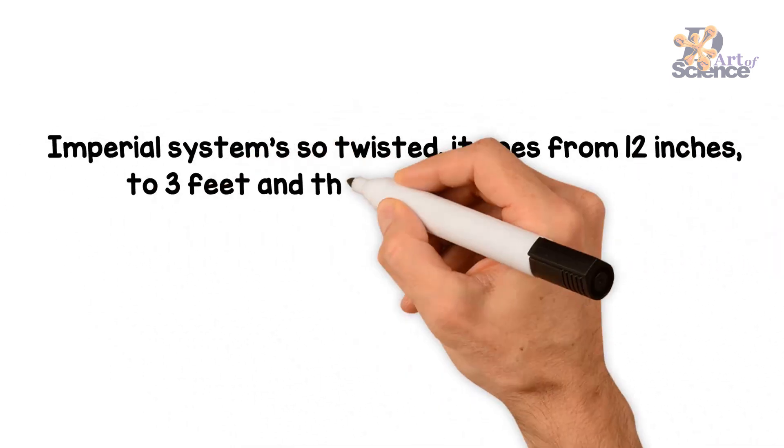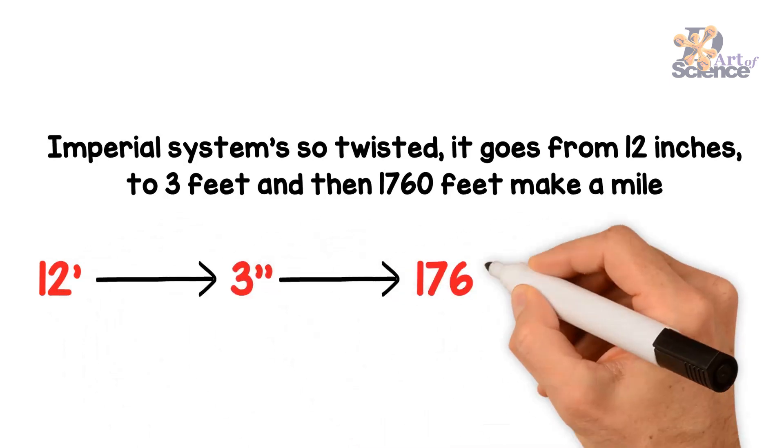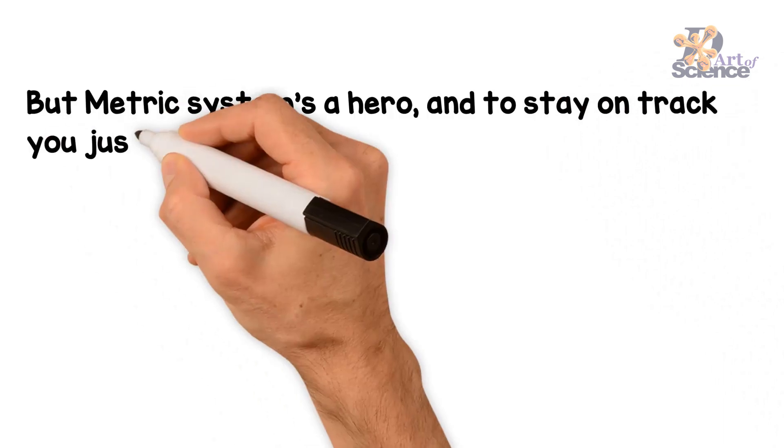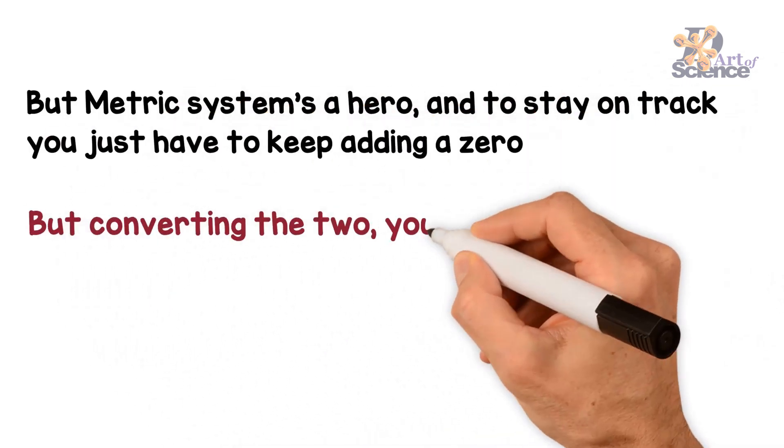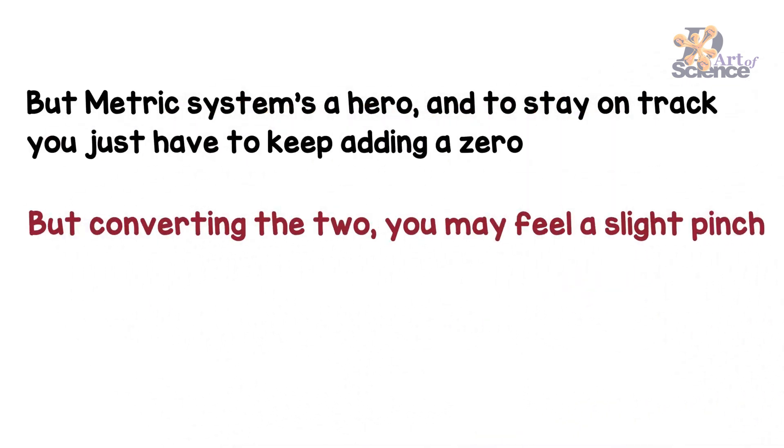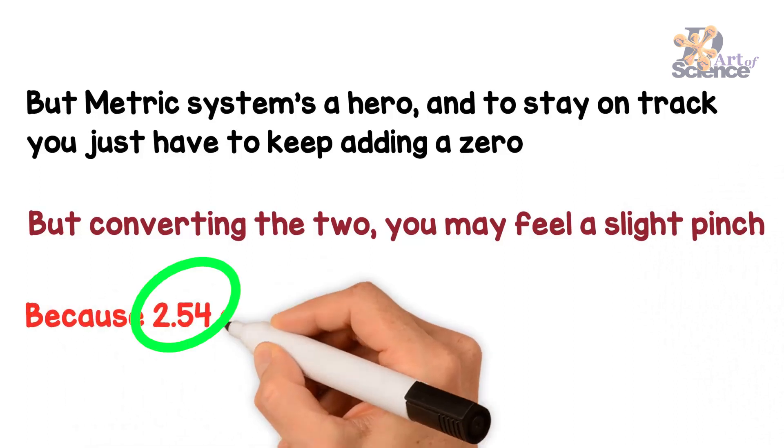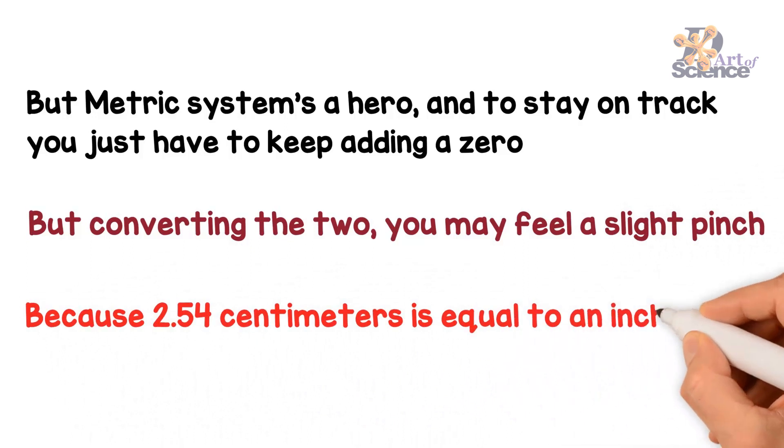Imperial systems so twisty. Going twelve and three and then a seventeen to sixty. But metric systems a hero. To stay on track just keep adding a zero. But converting the two, you may feel a slight pinch. 2.54 centimeters is equal to an inch.